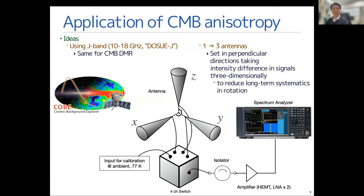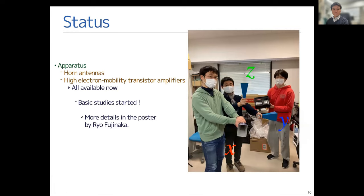We prepared a switcher with four channels and one for the calibration with the ambient and the liquid nitrogen temperature. We prepared three antennas, low noise amplifiers, and amplifiers as well, and all are available now. Some basic studies have already started. You can find more details of this experiment in the poster by Rial. Please check it out.